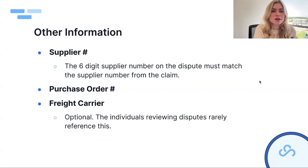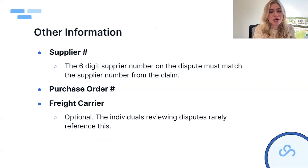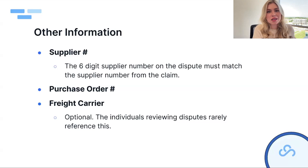Other information you'll need: your supplier number — the six-digit number, not the nine-digit — making sure it matches the supplier number on the claim. Your purchase order number — the Walmart PO they sent you. And optionally your freight carrier information — helpful if available, but not worth spending time searching for if you don't have it readily available.